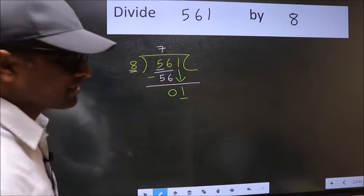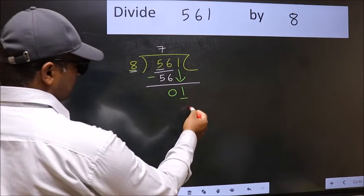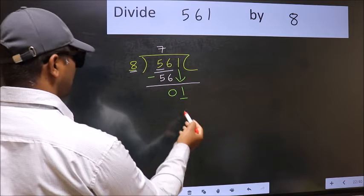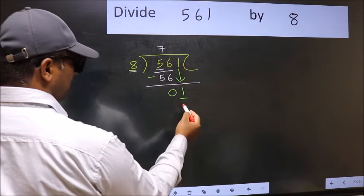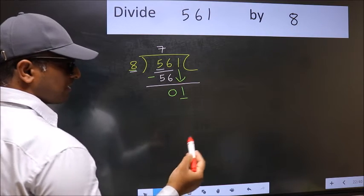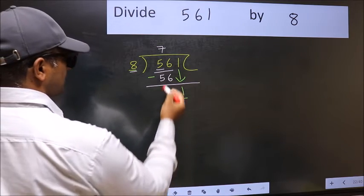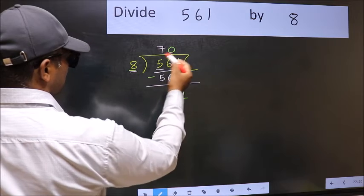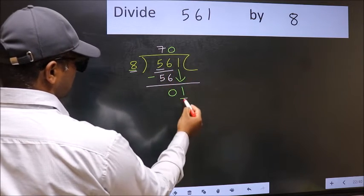what you should think of doing is which number should we take here. If I take 1, we will get 8. But 8 is larger than 1. So what we should do is we should take 0. So 8 into 0 is 0.